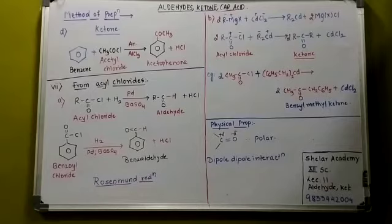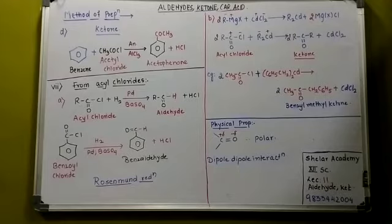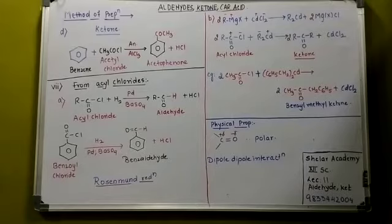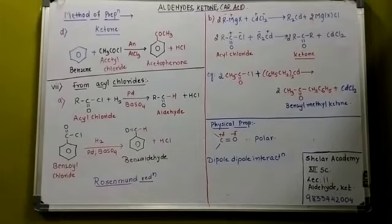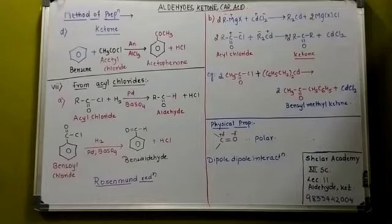I hope you have understood what I said. This reaction should be written on the ketone side. Now see, a simple reaction you are very well aware of - it is benzene when reacted with acetyl chloride. What is acetyl chloride? CH3COCl - that is acetyl chloride. So when the reaction takes place, what is the product?